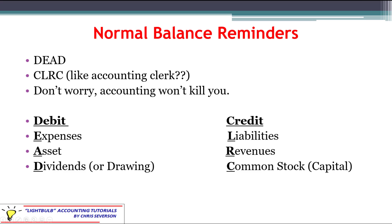Some of our journal entries might have both accounts being increased — one with a debit, one with a credit. They might have both accounts being decreased — again, one with a debit, one with a credit. Or you might have a situation where one account increases and one account decreases. That's fine as long as the debit credit rules are followed.